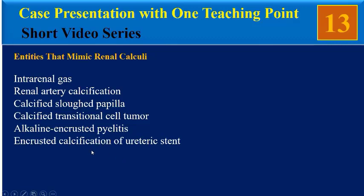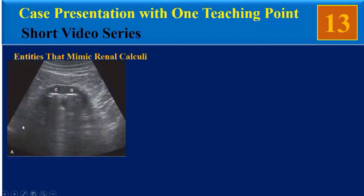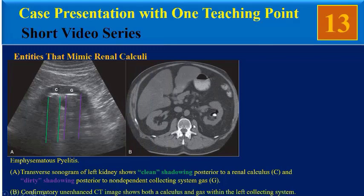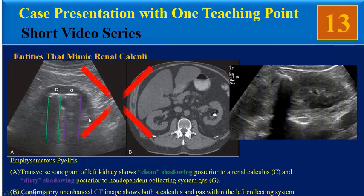The first entity is intrarenal gas. This sonogram is an example of emphysematous pyelitis. This transverse sonogram of the left kidney shows clean posterior shadowing posterior to a renal calculus and dirty shadowing posterior to non-dependent collecting system gas. A confirmatory CT scan shows both a calculus and gas within the left collecting system. Our patient is not compatible with this entity.